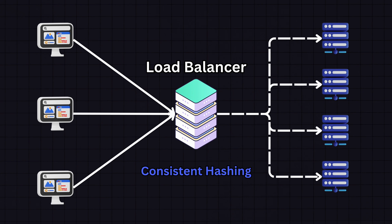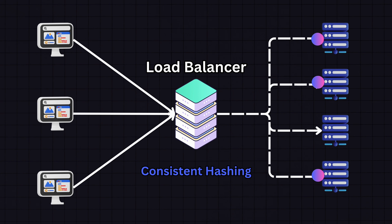The next common algorithm is consistent hashing, which uses a hash function to distribute data across various nodes. Imagine a hashed space that forms a circle, where the end wraps around to the beginning, often referred to as a hash ring. Both the nodes and the data, like keys or stored values, are hashed onto this ring. This ensures that the client consistently connects to the same server every time.